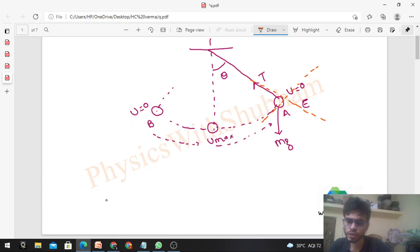So let me take the component of mg. This angle is theta, because this angle is theta, so this angle is also theta. So in this direction you will have mg cos theta, and this one will be mg sin theta.